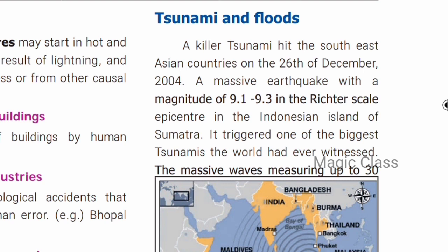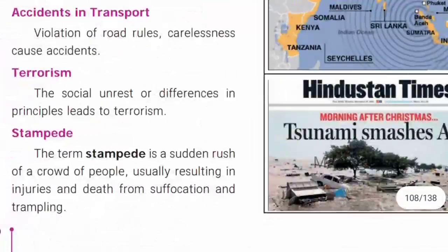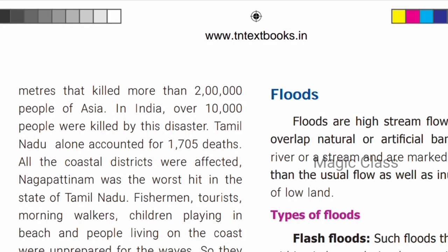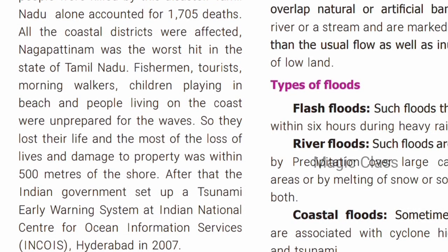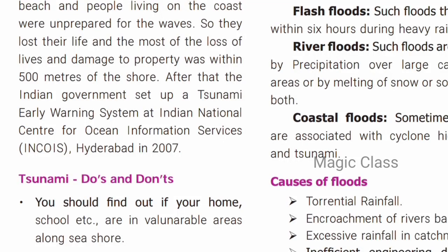In 2004, the magnitude of the earthquake was 9.1 to 9.3 — the biggest earthquake that triggered massive waves up to 30 meters in height. Over two lakh people were killed across Asia; in India, about 10,000 people were killed and 1,705 were confirmed dead. It was an unexpected disaster — many people were in coastal regions and lost their lives and property.